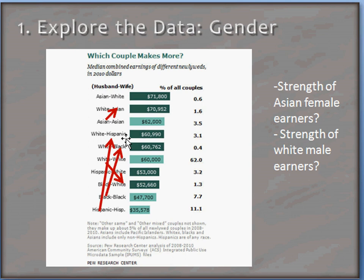For example, if we look at Asian females when they're married to Asian males compared to white males, the earnings are higher for white-Asian couples. So perhaps Asian females are particularly strong earners. Gender could certainly be a factor here, and differences in the strength of earnings from gender to gender could be an issue. However, the data is inconclusive.